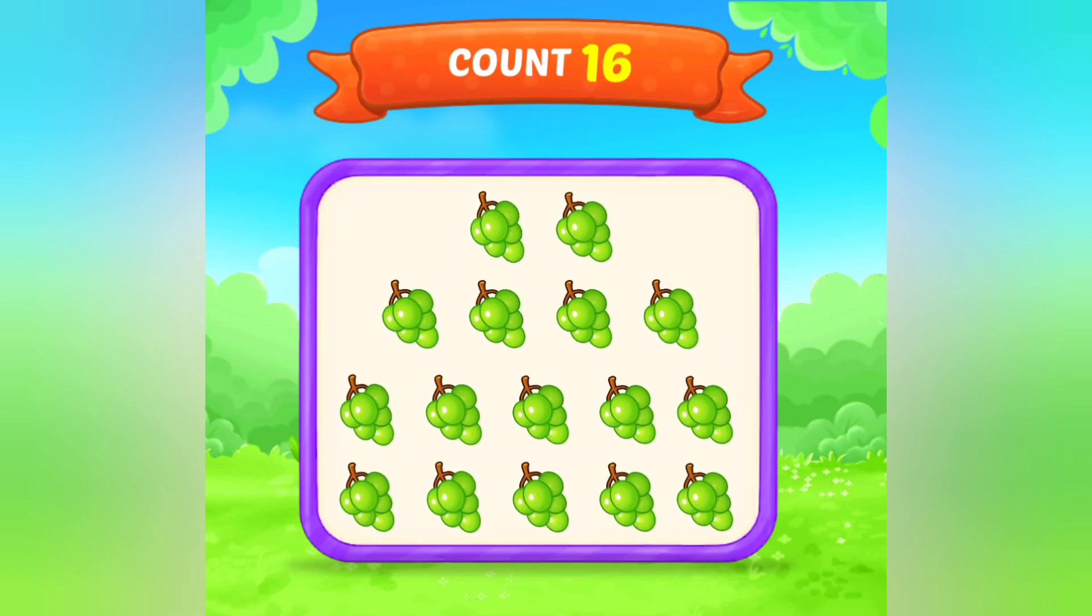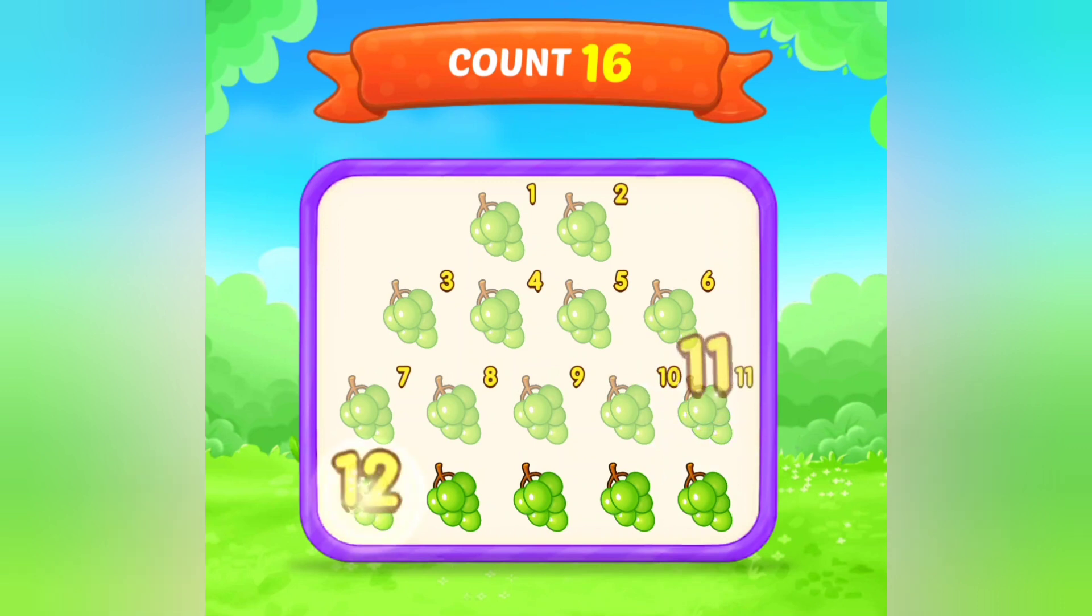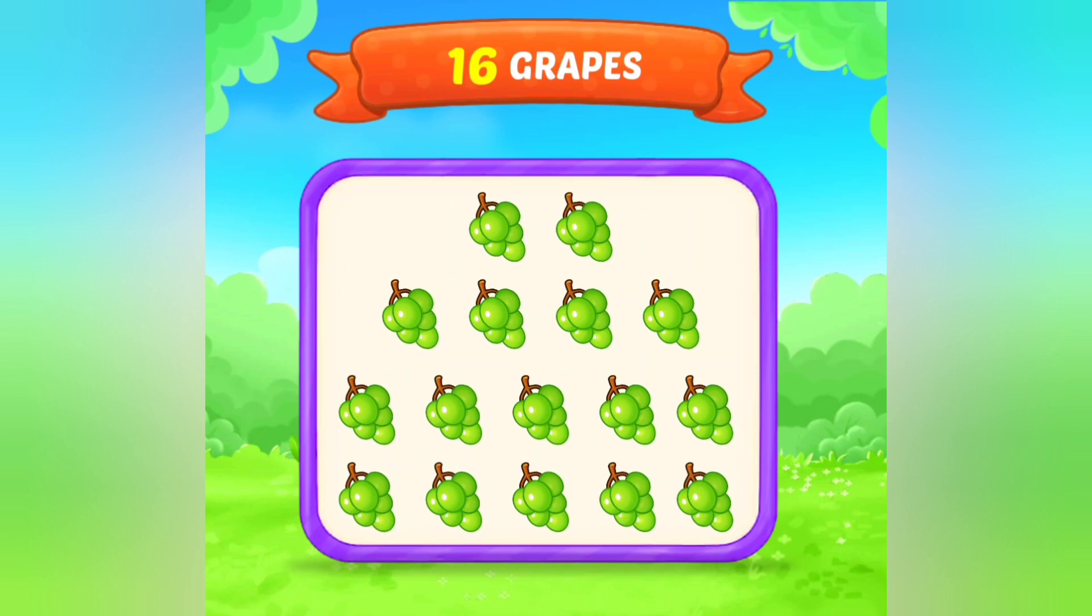Now, shall we count these grapes? Okay. There are so many grapes. We will count one by one. 1, 2, 3, count with me. 4, 5, 6, 7, 8, 9, 10, 11, 12, 13, 14, 15, 16. So, total how many grapes are there? 16 grape bunches are there.